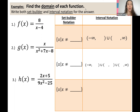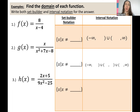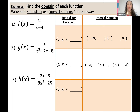For number one, there's one value of x that we can't plug into this function, and that would be four. Because on the previous slide, we saw if we set the denominator equal to zero — x minus four equals zero — we realize that x can't be four. So four would make the problem undefined, which means four cannot be in the domain.